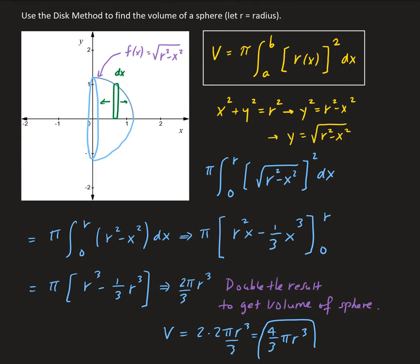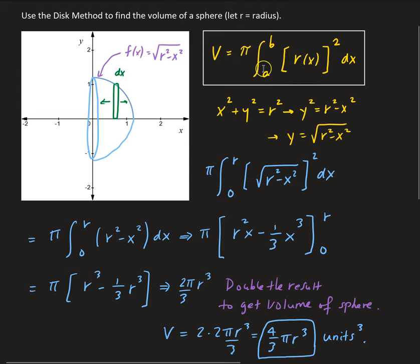That gives us the volume of our sphere with radius r, in units cubed. To summarize: we took the piece of the equation of the circle, bounded our region with that and the x-axis and the y-axis, rotated around the x-axis, and calculated the volume using the disk method formula. We set up our integral, evaluated it from zero to r, got two-thirds pi r cubed, and since that only gives us half the sphere, we doubled our result to get the full volume of four-thirds pi r cubed.